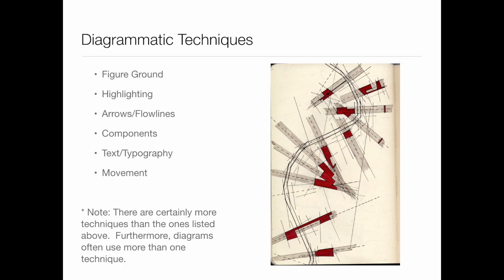Let's look specifically at diagram types and examples of these types. It's important to note that diagrams don't always fall neatly into one category. I've tried to divide these into categories so you can understand them, but a lot of times they overlap. You might have a figure ground study with some arrows and flow lines over the top of it, so it doesn't neatly fit in just figure ground or just arrows and flow lines — they can bridge the gap.